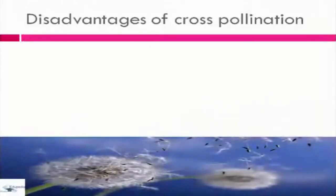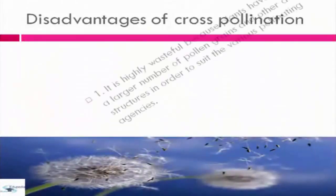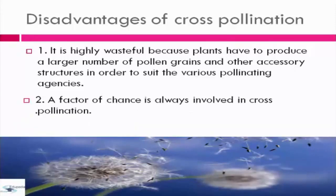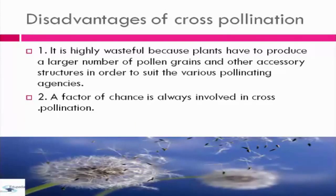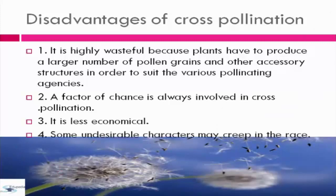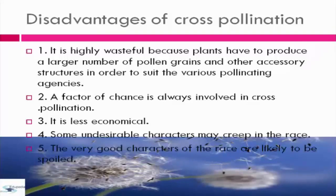Now let's discuss the disadvantages of cross-pollination. First, it is highly wasteful because plants must produce a large number of pollen grains and other accessory structures to suit various pollinating agencies. A factor of chance is always involved and it is less economical. Some undesirable characters may enter the offspring, and very good characters of the variety are likely to be spoiled.